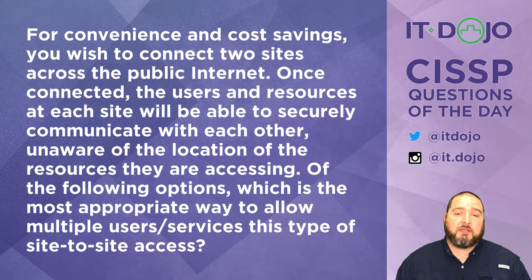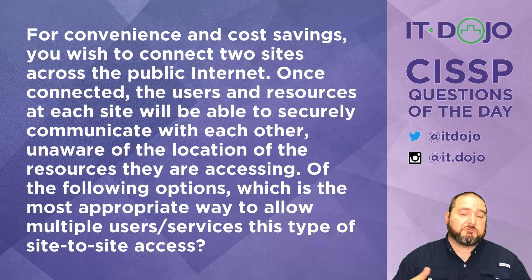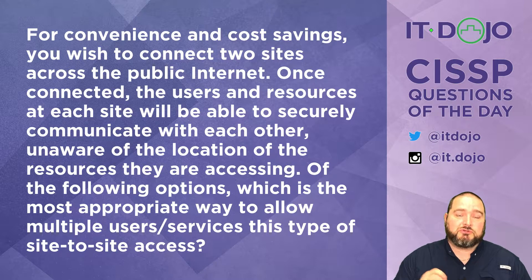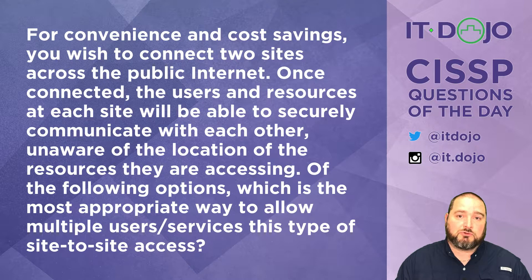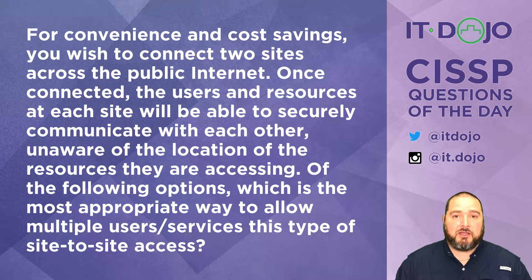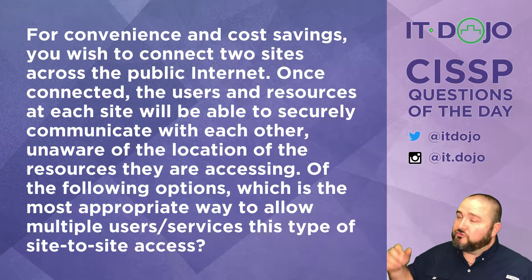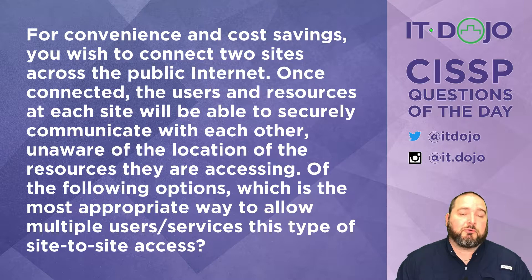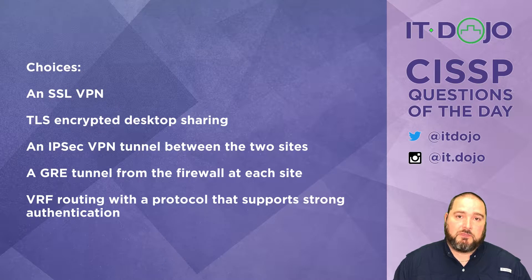Question number two — kind of involved. For convenience and cost savings, you want to create a connection between two sites using the internet as the mechanism. However, you want users at each site to be able to seamlessly and securely access resources from one site to the other, without being aware that these sites are being connected across the internet. Of the following options, which is the most appropriate way to make that happen? Give those options a read, click pause if you need to, and when you're ready we'll break it down.